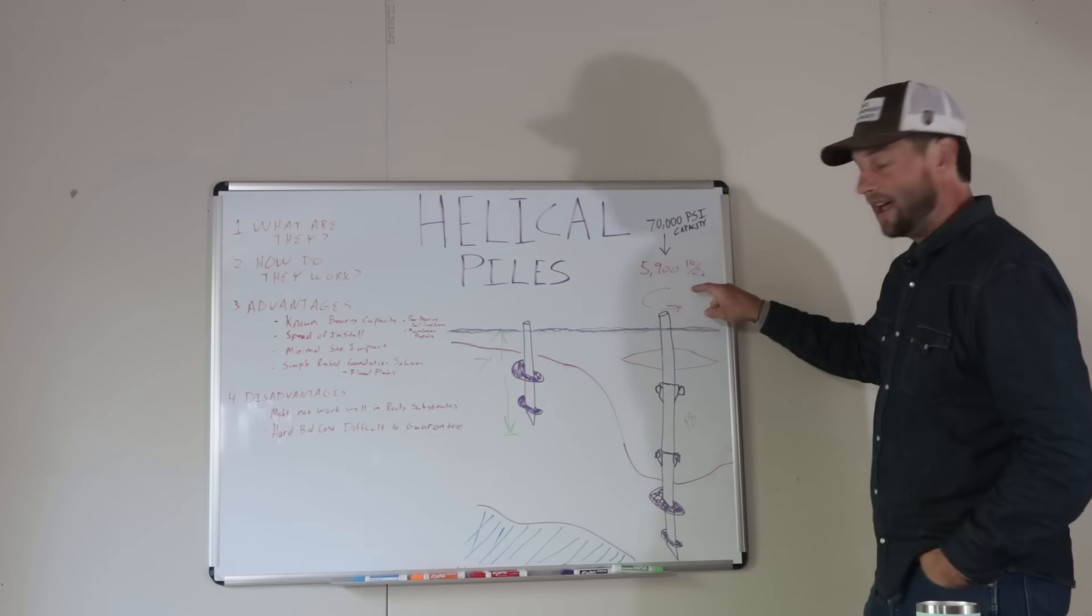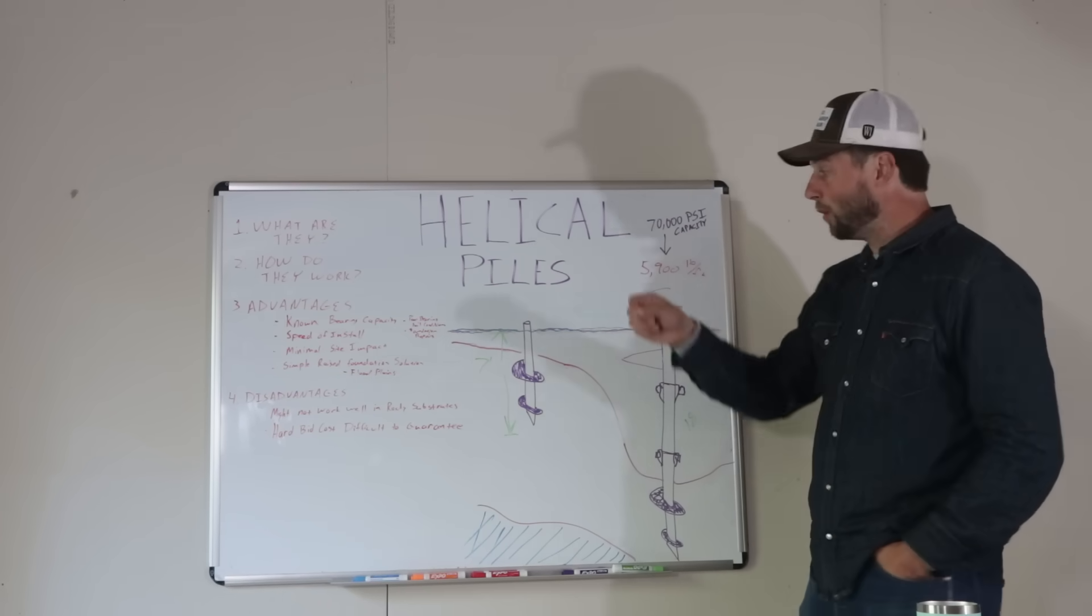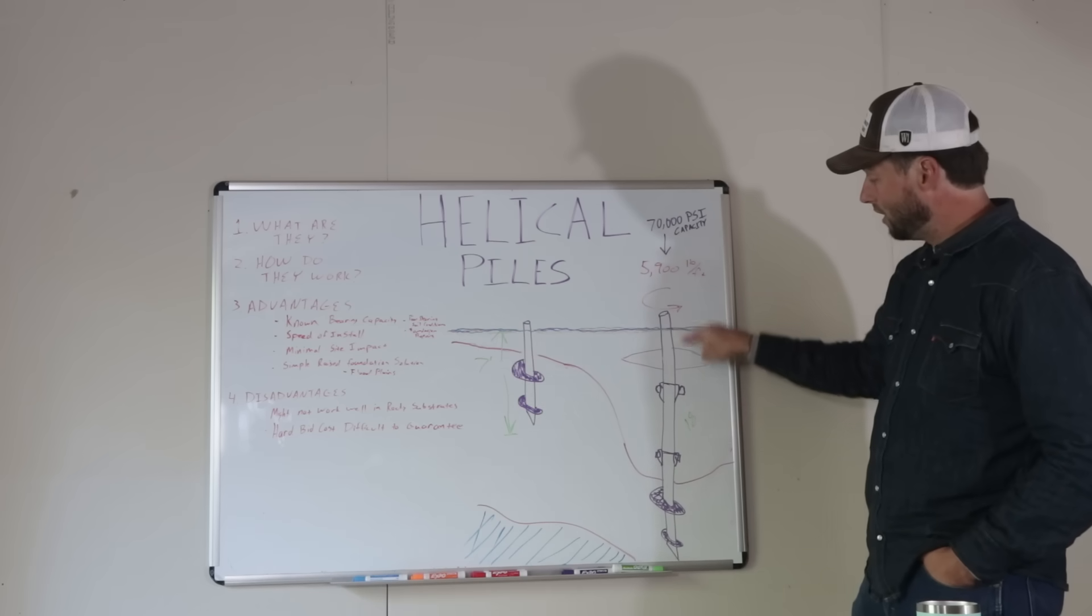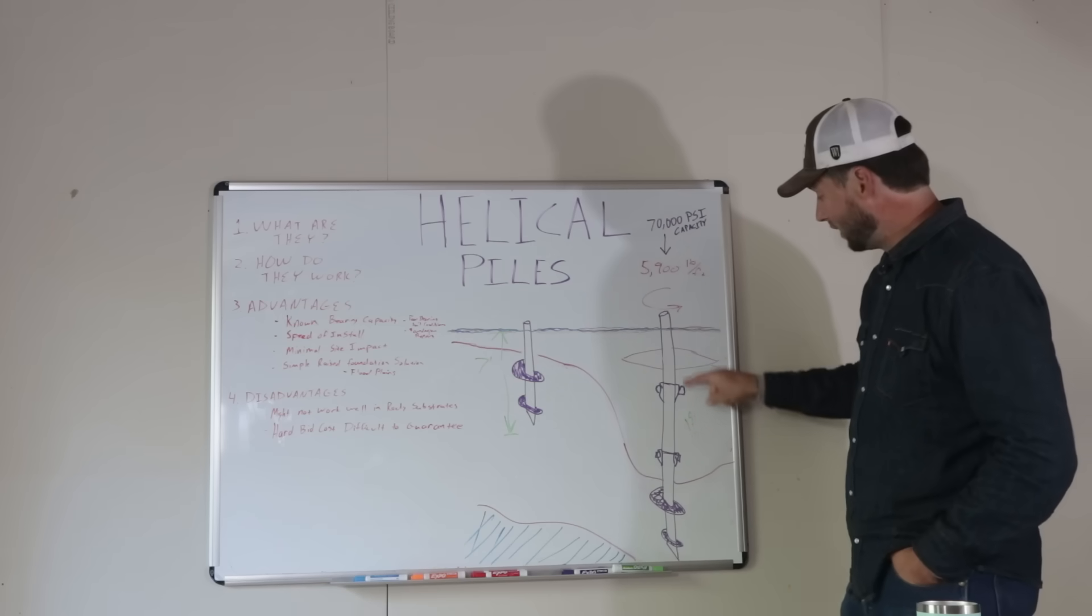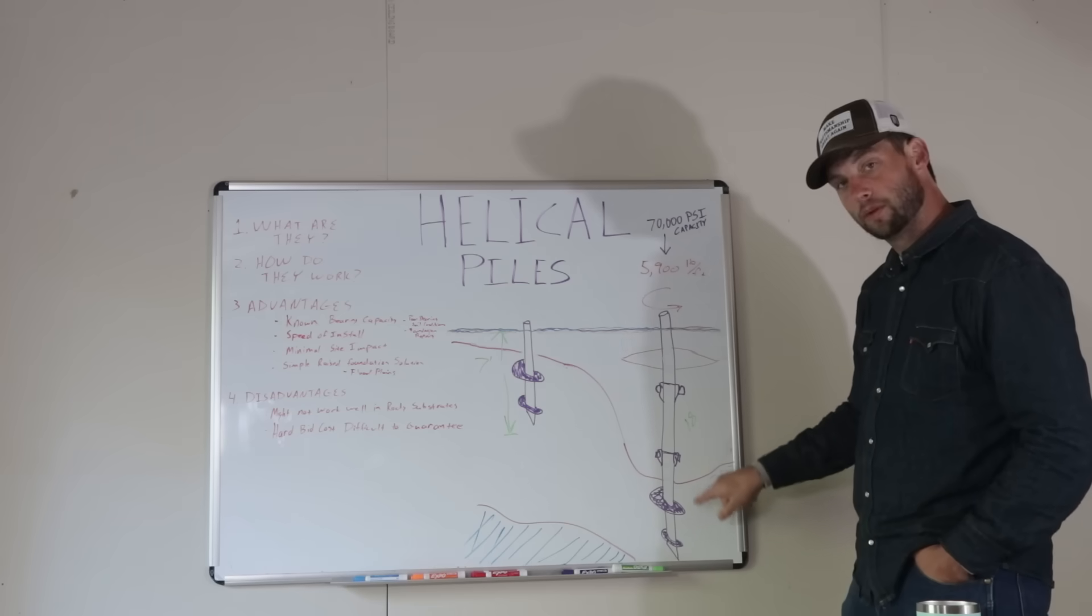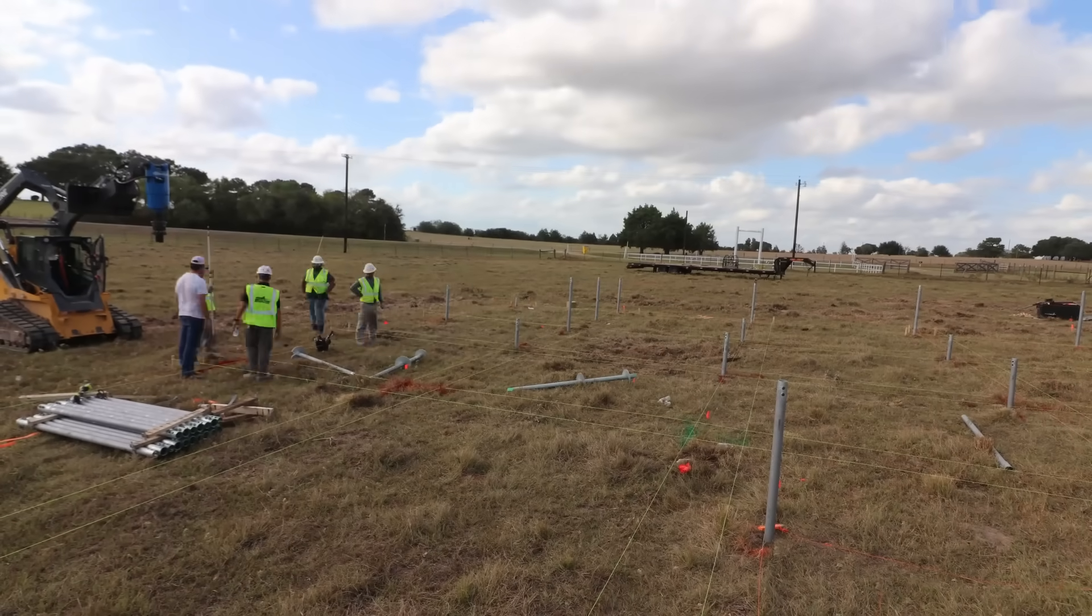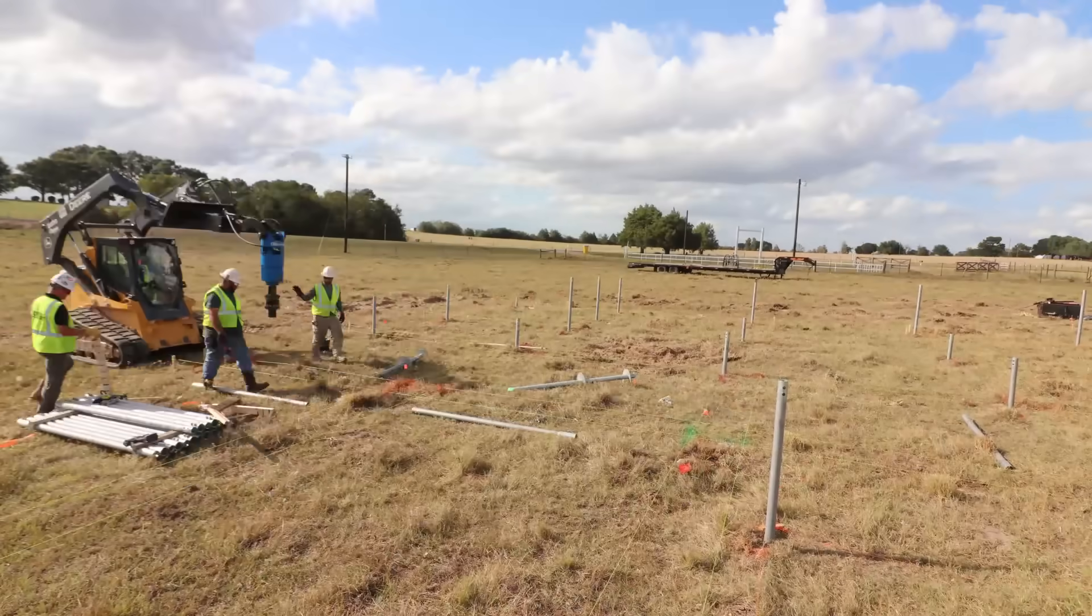Whereas a pile transfers that load all the way down through the shaft. Now, when we're putting these in, we have to have 5,900 pound-feet of torque for at least three feet. We don't want to just punch through like we did here. It started building and then the torque dropped off again because we punched through this hard soil and it took us another little ways before we found that stable load-bearing soil again.